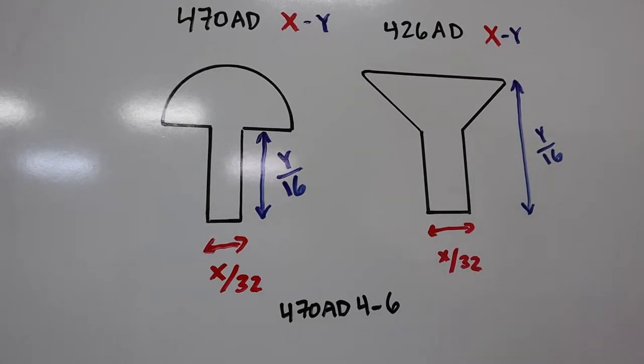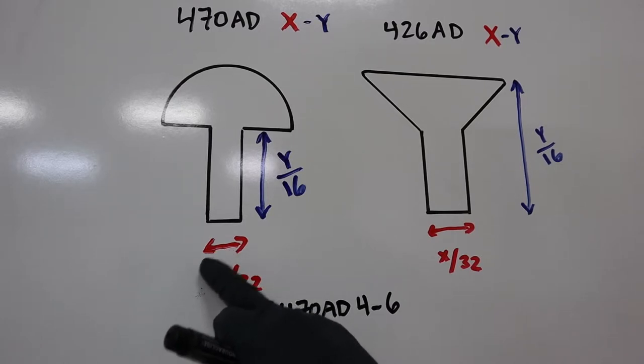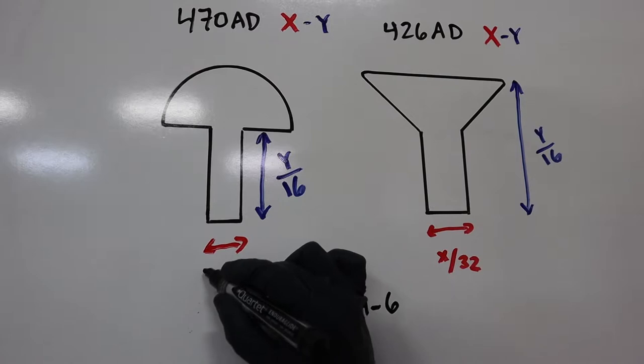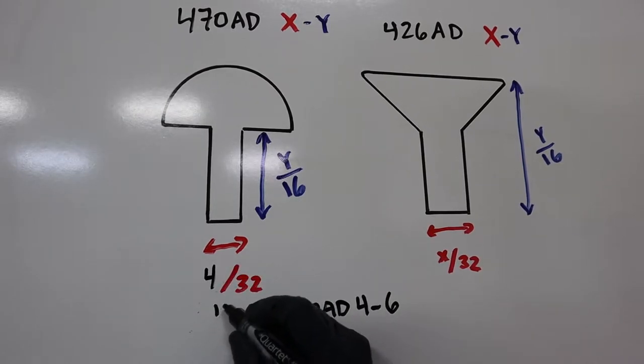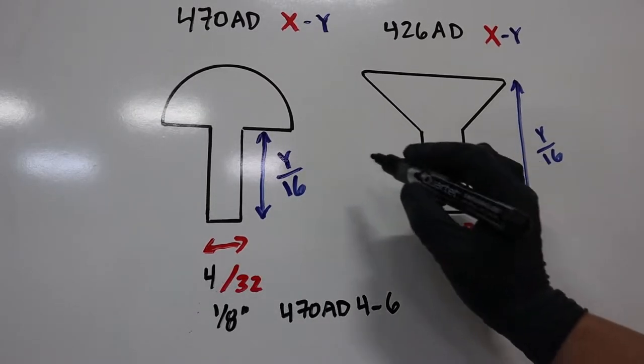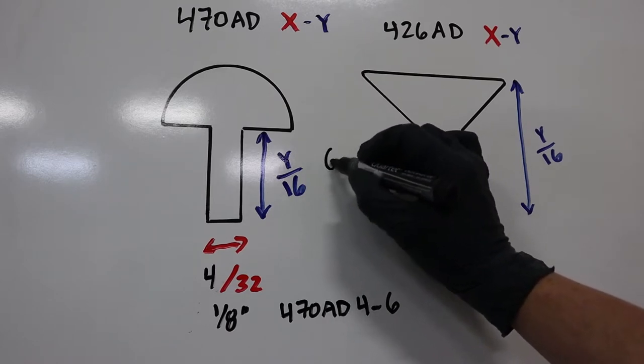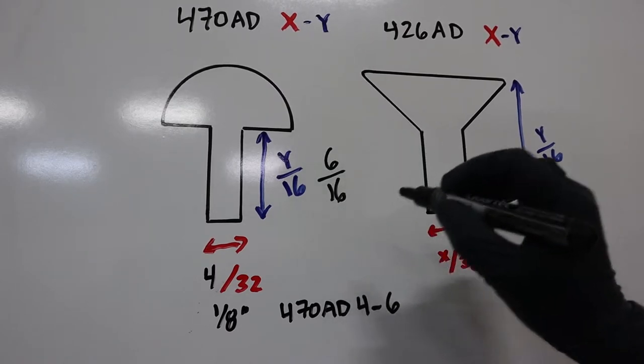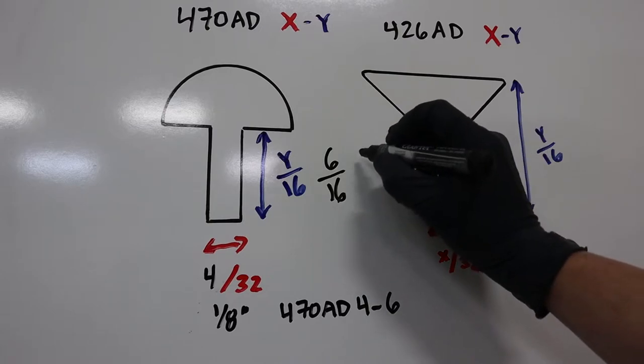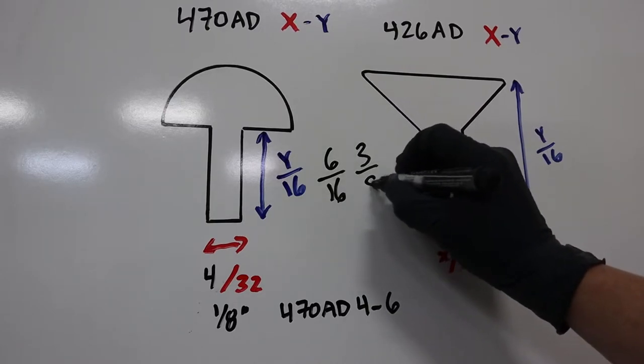So for a universal rivet, an AD 4-6, you'd have a diameter of 4 32nds or 1 8th inch, which is a popular rivet to have in an aircraft, typically used internal in the aircraft where we don't really care about air flow. And for the length 4-6, it would be 6 16ths or 3 8ths of an inch.